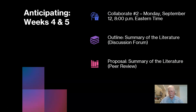In week four you will also have a discussion forum where you will post an outline you propose to use in writing your summary of the literature. Dr. Chandler has a great resource she calls a literature review map as a way of organizing your notes. I'll also give you a sample so you can see what it looks like. There's no one perfect way to do an outline — almost any outline that will be helpful in your composition will be fine. You'll post it in the discussion forum, provide feedback to one another, and then in week five you will actually compose your summary of the literature as a peer review opportunity.